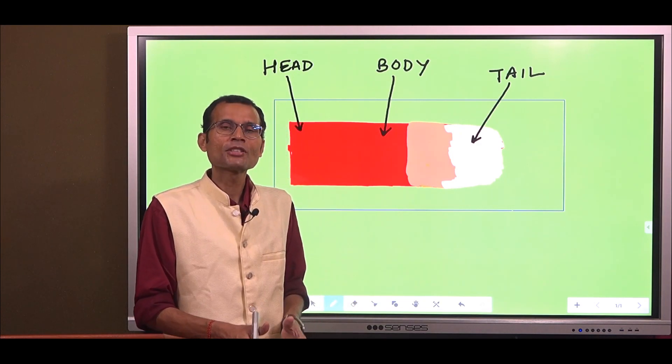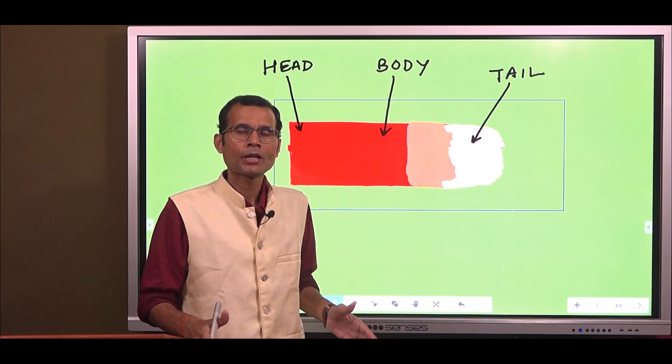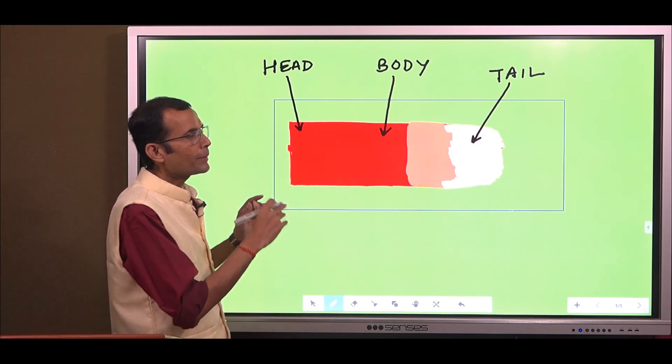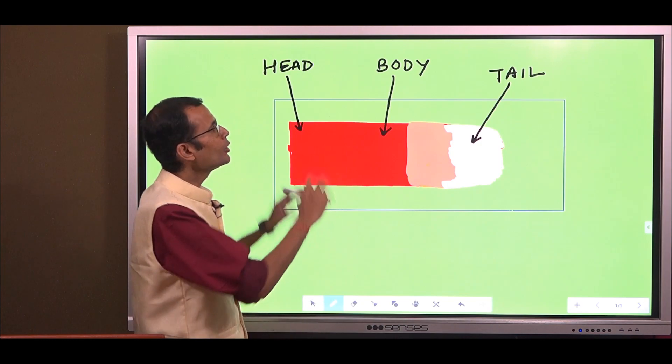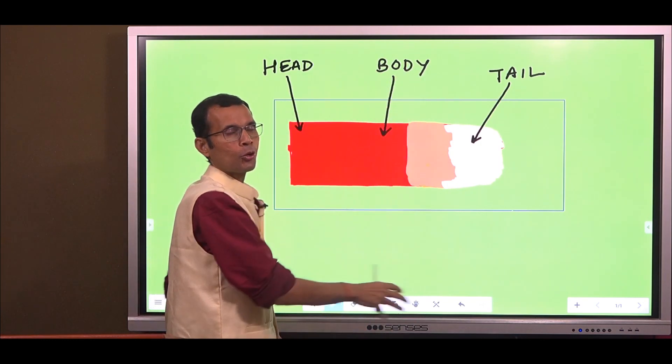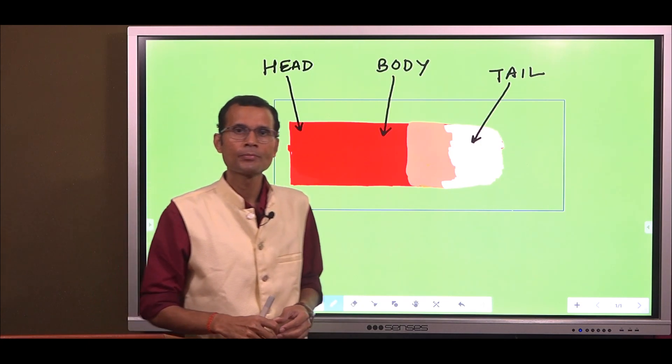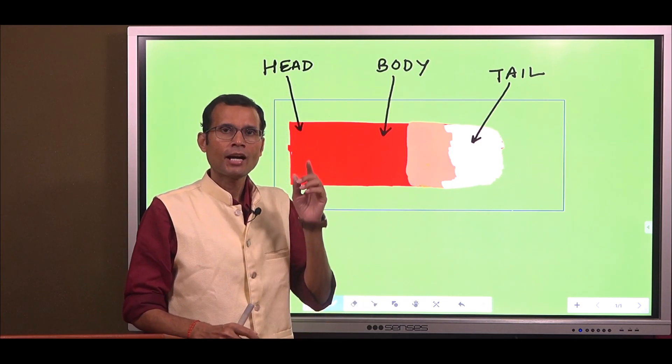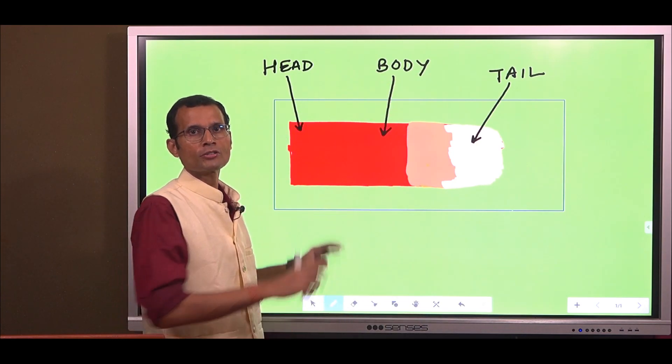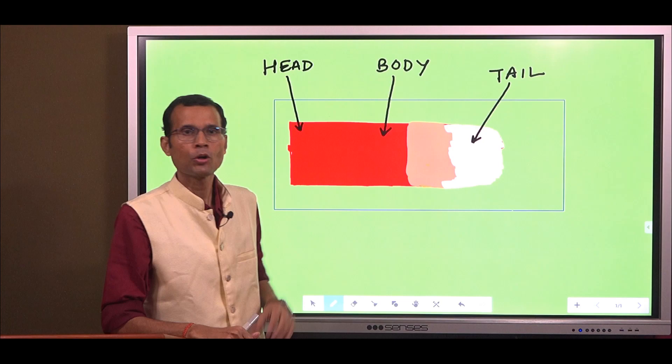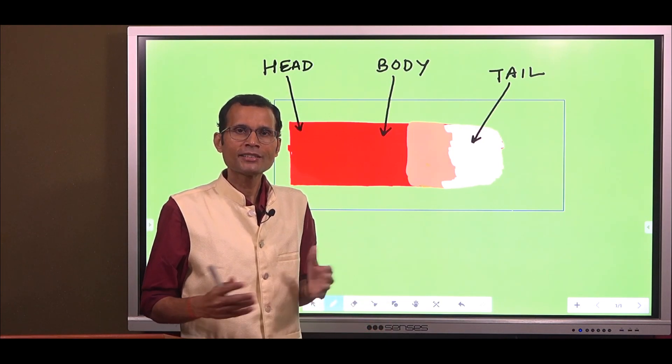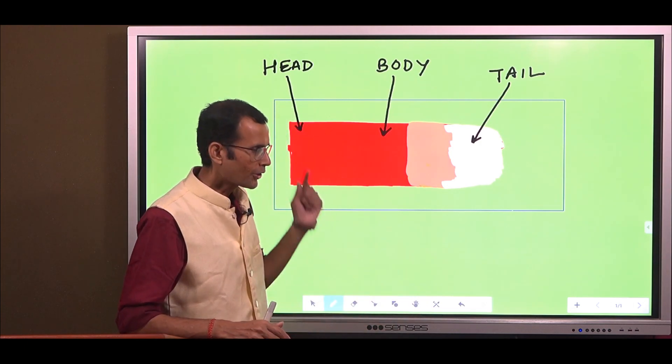If you have observed a Neubauer's chamber under the microscope, you will find that RBC square is at the center and WBC squares are at the periphery on the four corners of that chamber. Can you recall that? RBC square in the center and WBC squares on the four corners or toward the periphery of that chamber. Why is that? Is there any particular reason, reason of aesthetics or what?